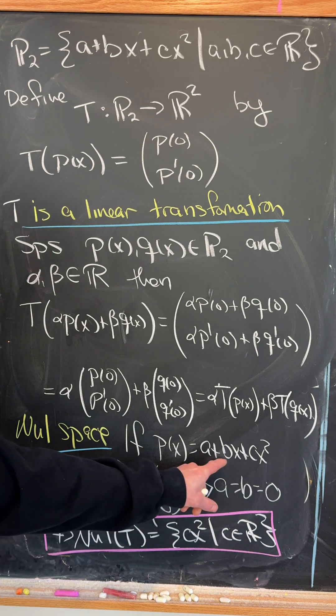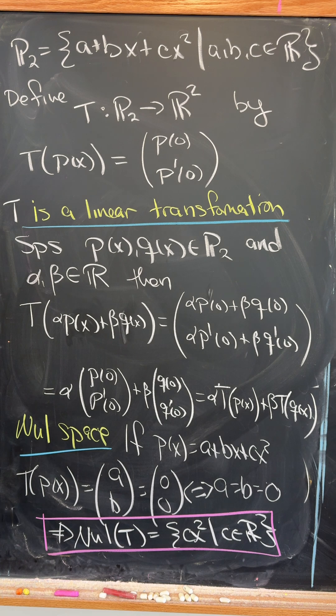this at 0 the b and the c term cancel and leave us just a in the first component. And if we take the derivative and evaluate it at 0 we get b in the second component.